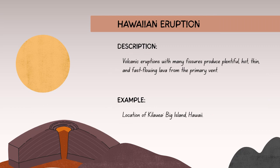A Hawaiian eruption is a type of volcanic activity characterized by relatively gentle and effusive eruptions, typically involving basaltic lava. The magma has low viscosity, allowing for smooth and fluid lava flow. Hawaiian eruptions are generally non-explosive and effusive, with lava flowing steadily from a central vent. These eruptions often lead to the formation of shield volcanoes, and the lava flows can cover large areas, creating extensive lava fields.